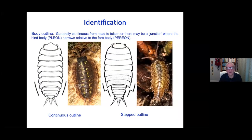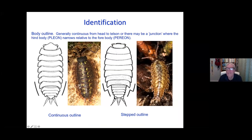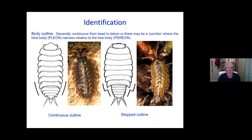The most straightforward character that is really helpful and readily seen in woodlice is just what the outline looks like. Is it a continuous smooth outer edge, or does it have a step and a discontinuity — where the perion and pleion have a discontinuity, a step, and it's narrower at the back than at the front? Very easy and very helpful in a whole range of woodlice. Just as soon as you see one, look at the outline — is there a junction or isn't there?